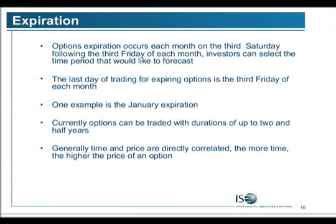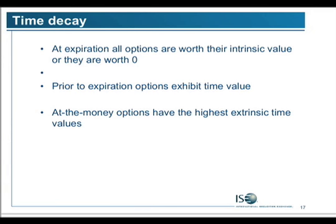Option expiration occurs each month on the third Saturday following the third Friday of the month. The settlement values for ISE FX options stop trading at 12 o'clock noon. If I'm long a February option and it's February expiration, that's settlement day and I'll be focused on that. In the equity world you can trade options up to two and a half years, but in the FX world, options currently go out at least up to 10 months. Generally, the greater the time, the greater the price.